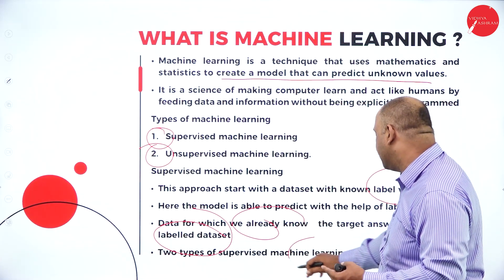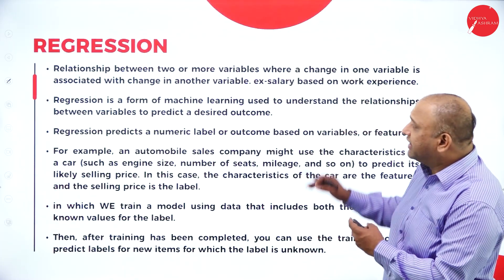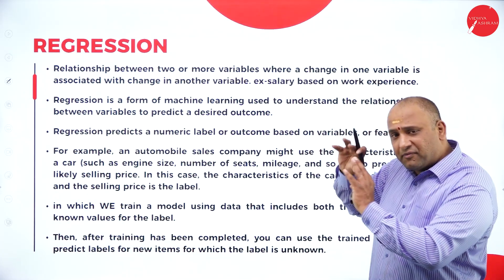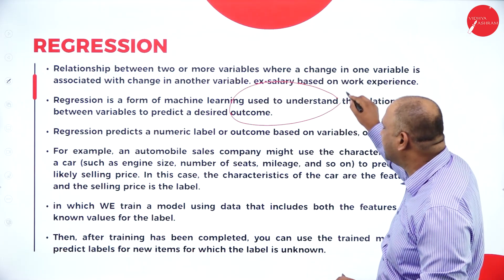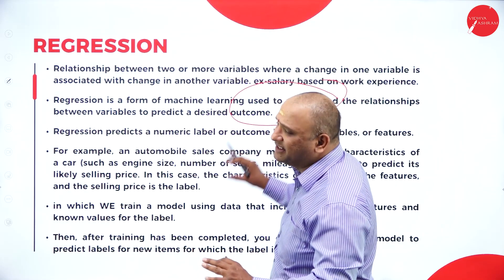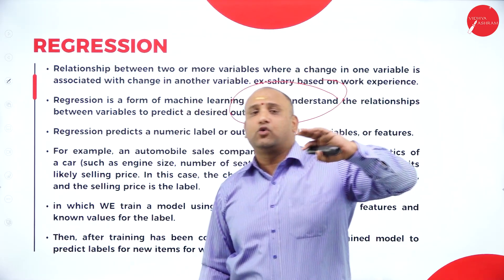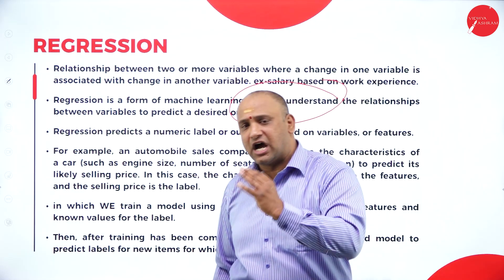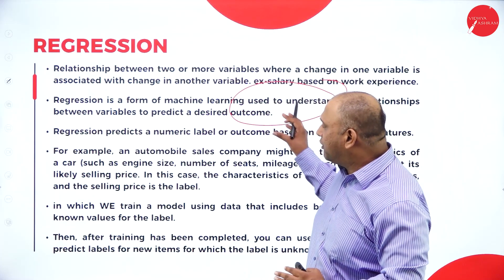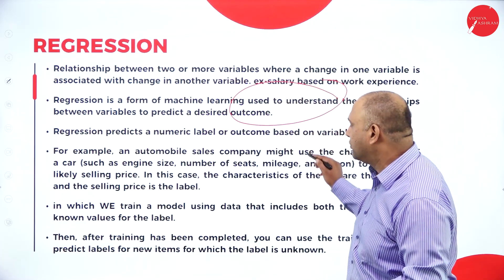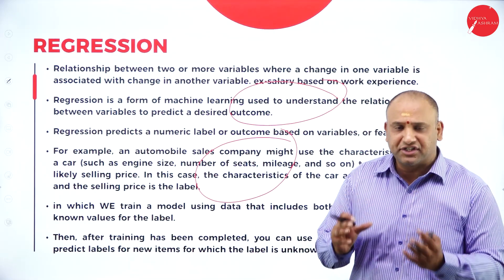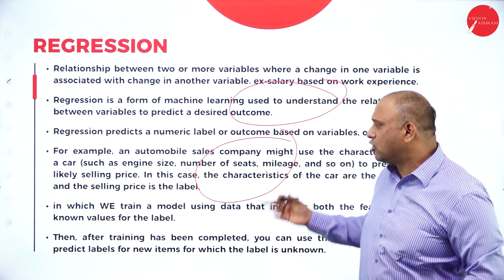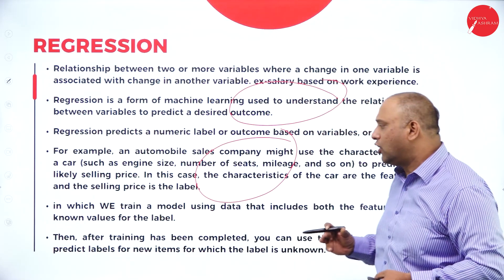Two types of supervised machine learning tasks include regression, which involves the relationship between two or more variables. Regression in machine learning is used to understand the relationship between variables and the desired outcome. For example, a regression model can understand a student's performance — his test outcome versus hard work versus output. You can also use it in an automobile sales company to understand sales versus performance, or brand value versus performance.